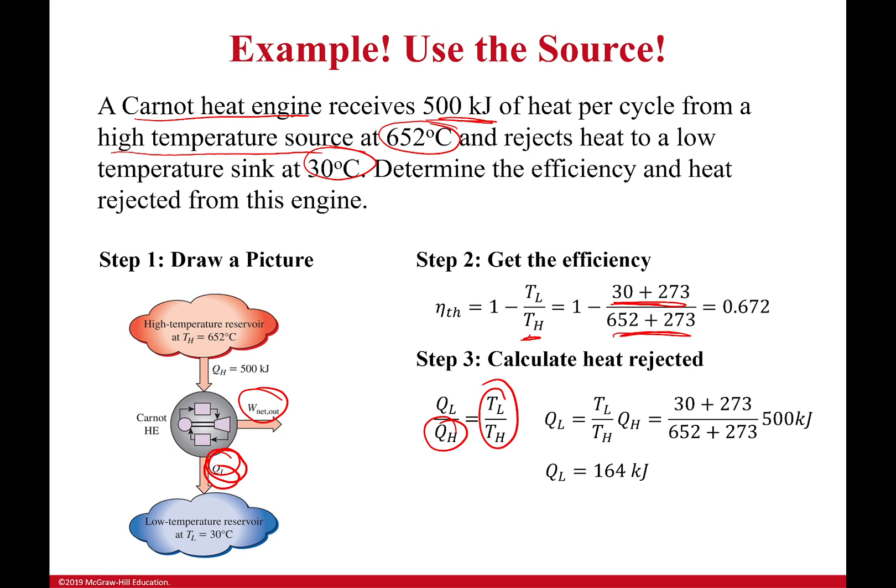If I wanted to, I could also find out the work being produced. That's pretty easy. It would simply be my QH times my thermal efficiency, so 500 times 0.672, which gives us 336 kilojoules of work being produced from this heat engine.